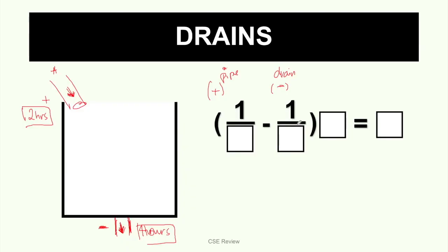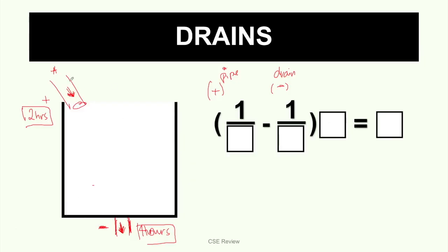The concept is the same and you solve it the same way. The first fraction is your pipe — positive, because it adds water. The second fraction is the drain — it becomes negative or minus. So if we fill in the information: pipe A takes 2 hours to fill the tank, that's 1/2. Drain takes 4 hours to empty the tank, that's 1/4. And then x is the number of hours together that they are both open. This equals 1, because there's only one tank to fill.